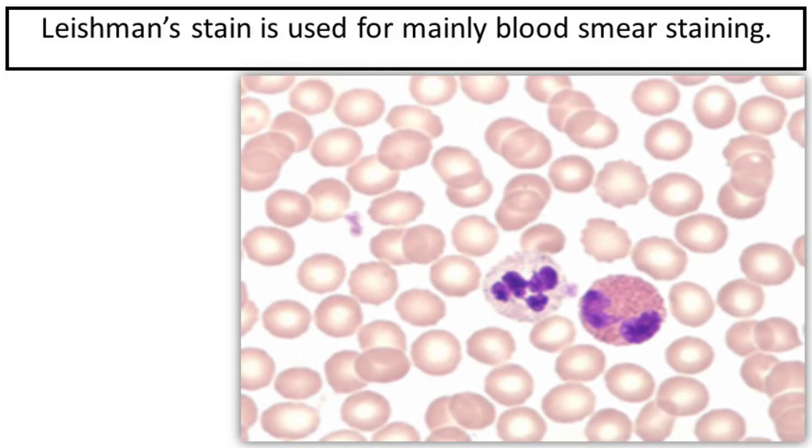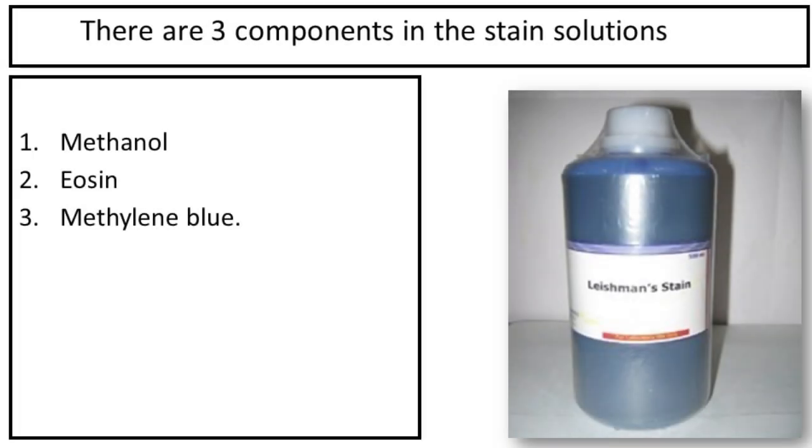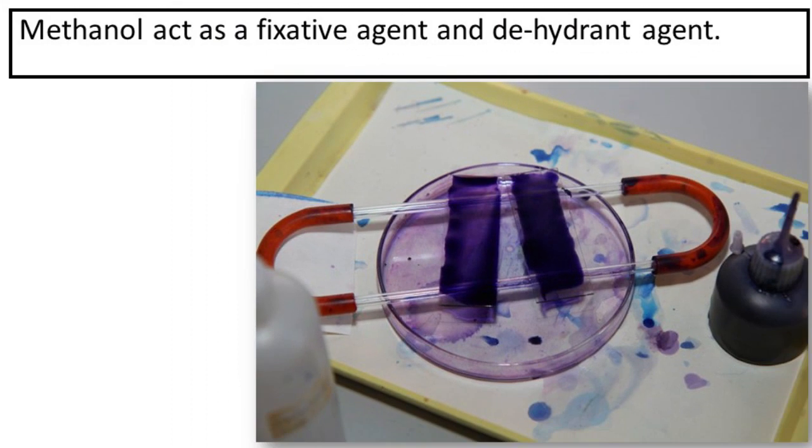Leishman stain is used mainly for blood smear staining. There are three components in the stain solution: methanol, eosin, and methylene blue. Methanol acts as a fixative agent and dehydrant agent.